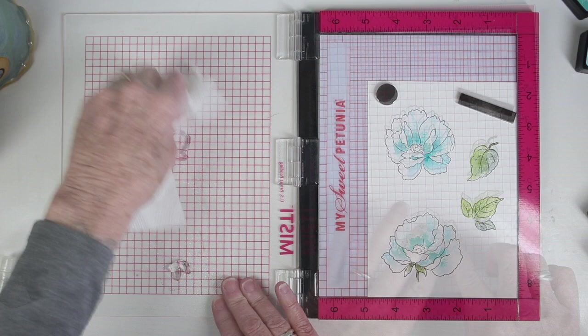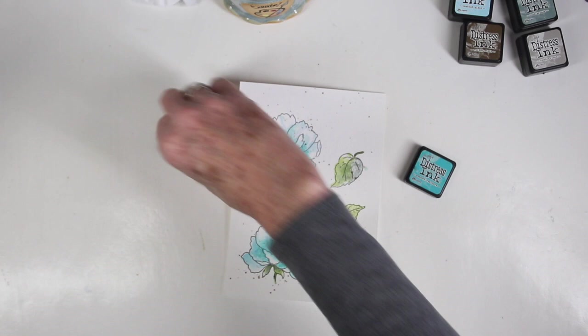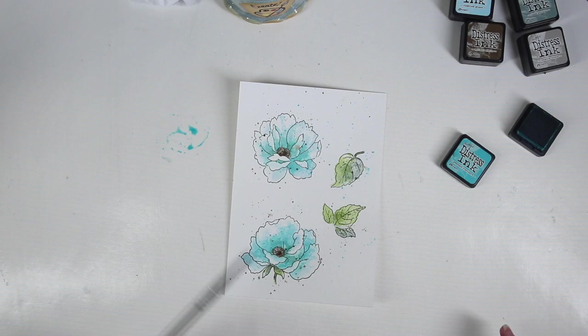And lastly, I'll use the third layer to get some darker color using peacock feathers on the flowers. Once I had all my pieces stamped, I decided to add some speckles, so I'm just using some of the distress inks that are in the color of my flowers, and I've mixed it with a little bit of water. And I'll just be flicking the color on randomly before I die cut.